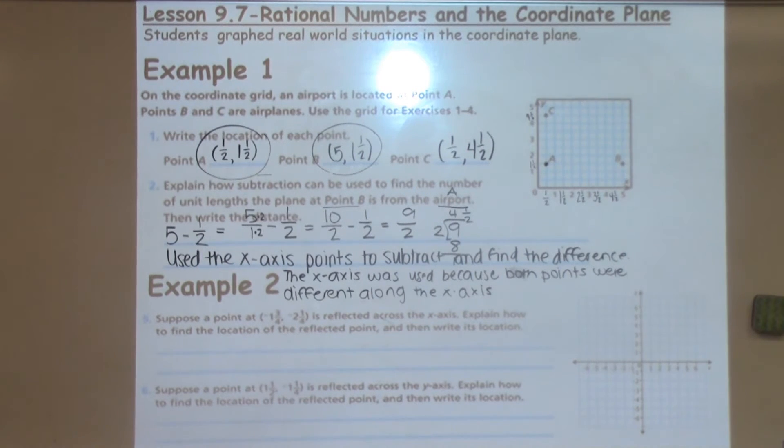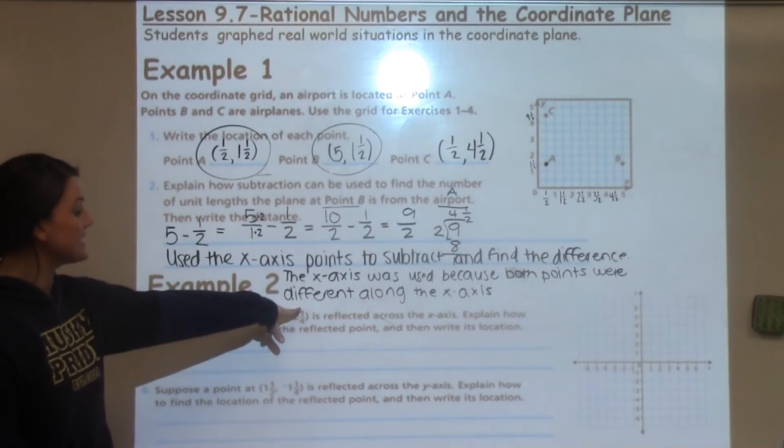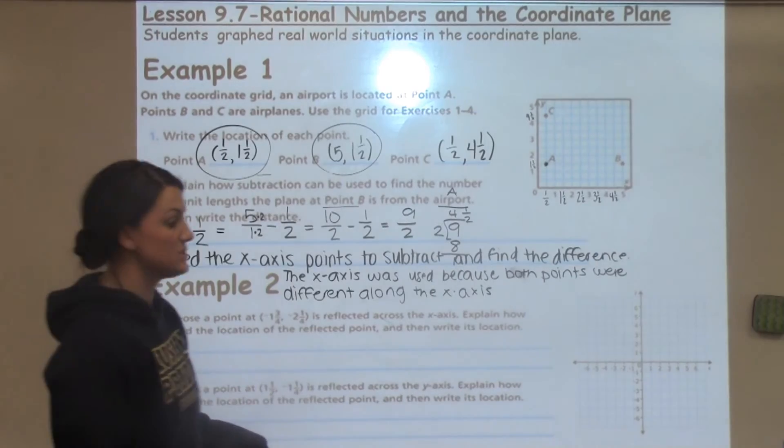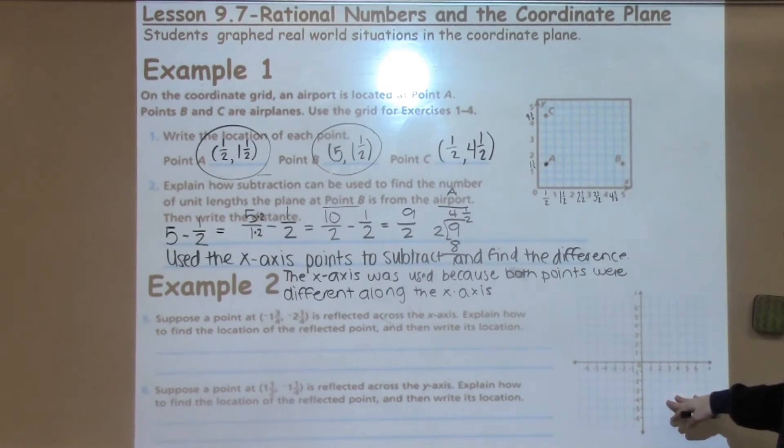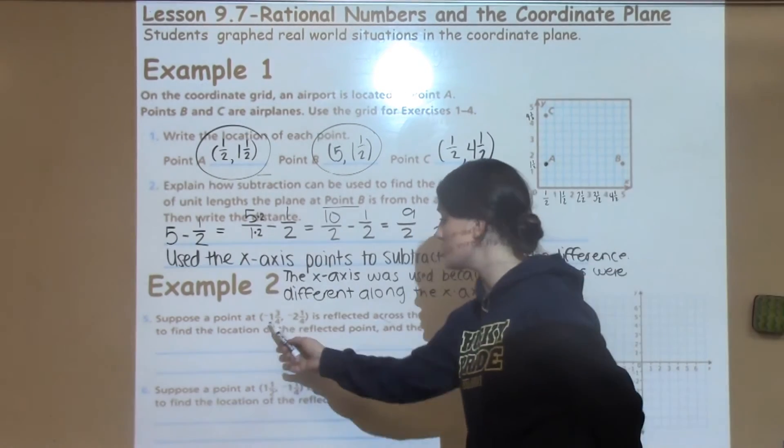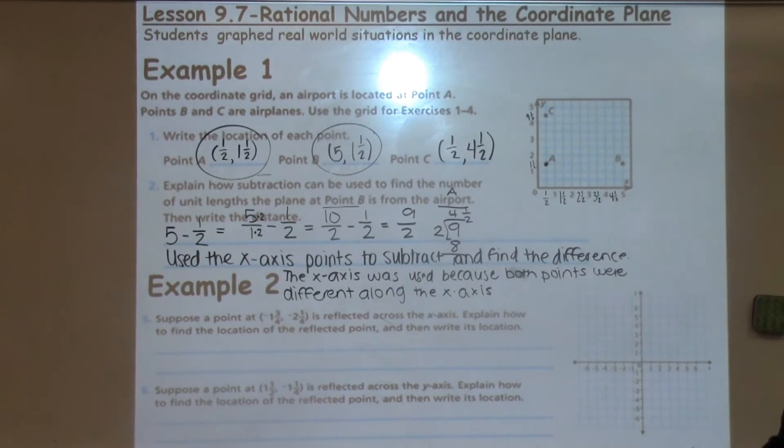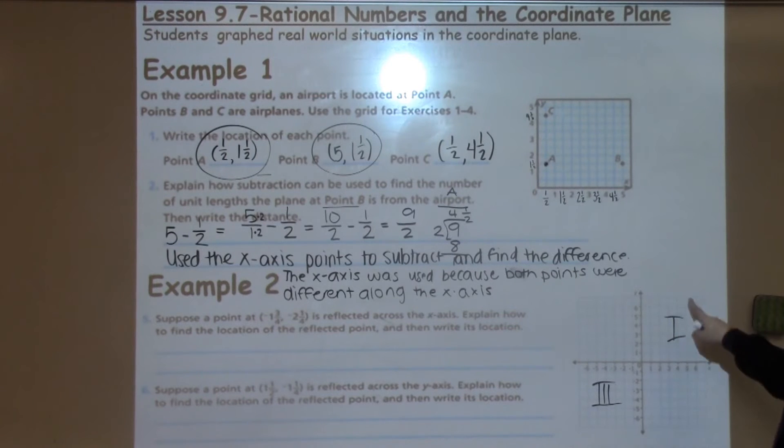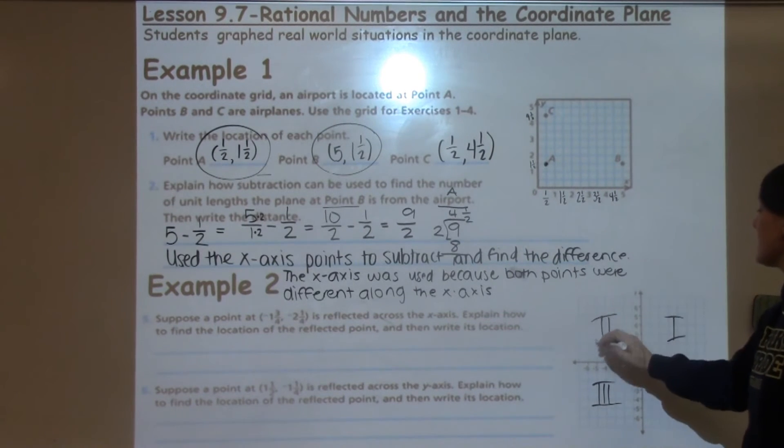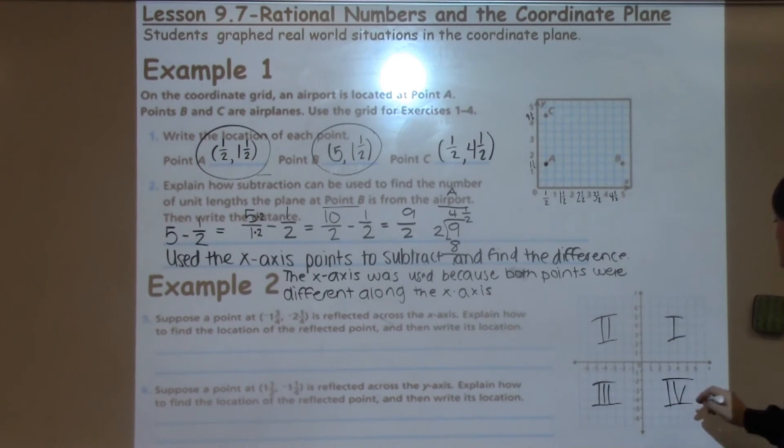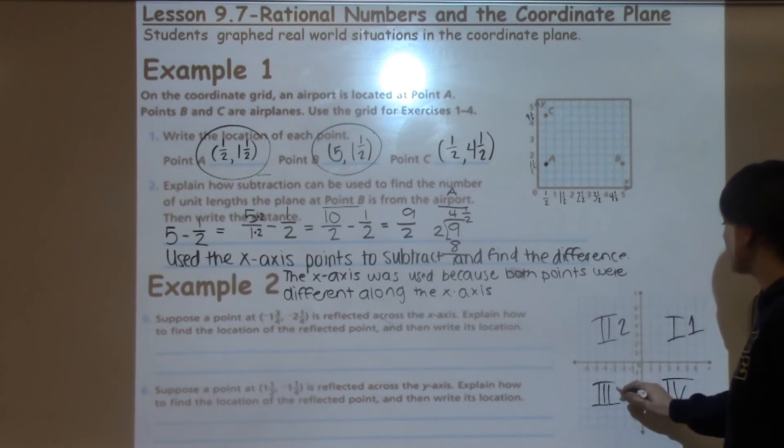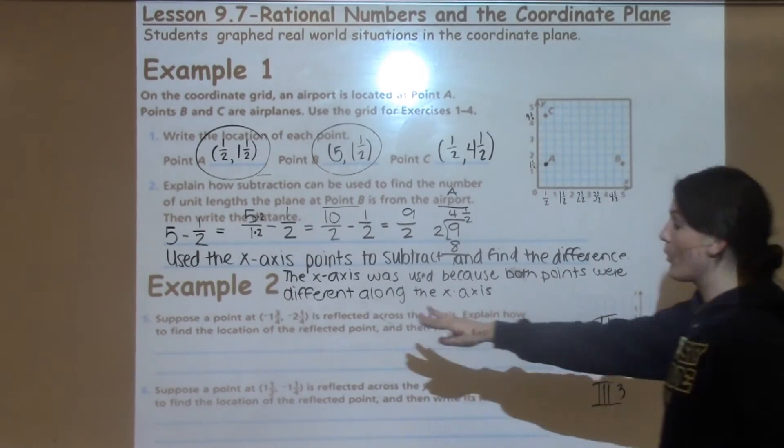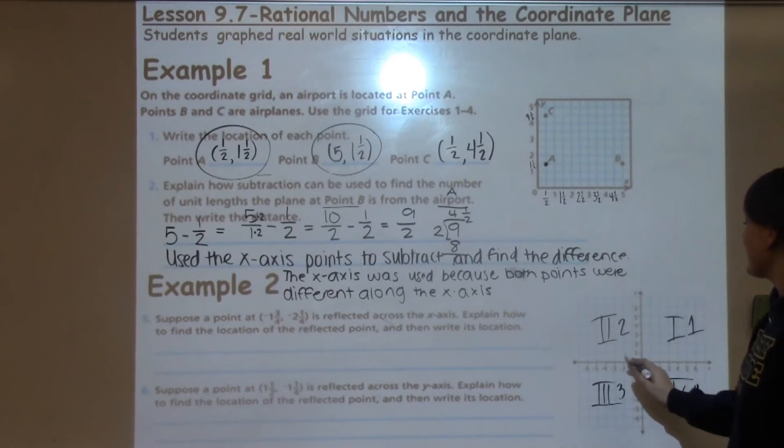Example two says, suppose a point at negative one and three-fourths and negative two and one-fourths is reflected across the x-axis. Explain how to find the location of the reflected point and then write its location. So I have a four-quadrant coordinate plane here for us just to get a visual. If I'm working with two negative numbers, there is only one spot where two negative numbers can be. And that would be in this quadrant here, which is known as quadrant three. Our quadrants start in quadrant one with both positive numbers. Then they move counterclockwise when you number them to be quadrant one, two, three, and four. Students don't have to use Roman numerals to show that, but many times in math, Roman numerals are used to show the different quadrant numbers.